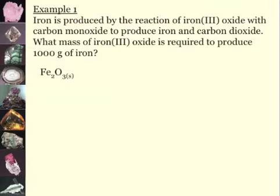If I have an example here: iron is produced in the reaction of iron(III) oxide with carbon monoxide to produce iron and carbon dioxide. What mass of iron(III) oxide is required to produce 1000 grams of iron? Well, I'm going to start with iron 3 oxide, add that to carbon monoxide gas, and that's going to give me solid iron and carbon dioxide. I balance it out, and now I have a ratio of 1 to 3 to 2 to 3.